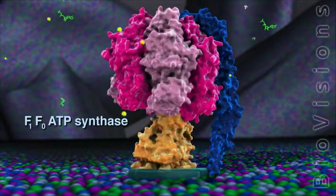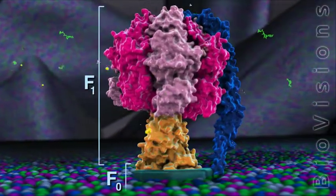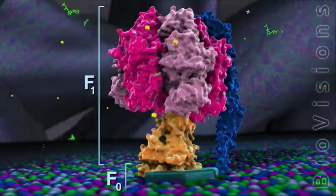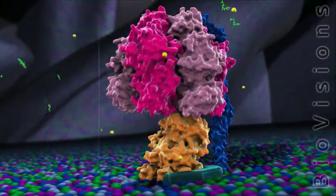Anchored in the inner mitochondrial membrane, the ATP synthase is divided into the F0 domain embedded in the membrane, and the F1 domain in the mitochondrial matrix.